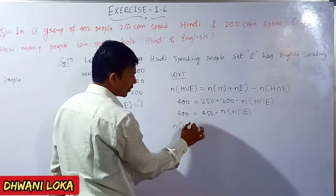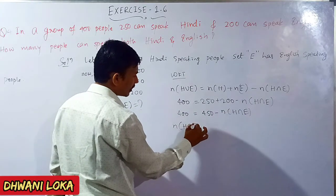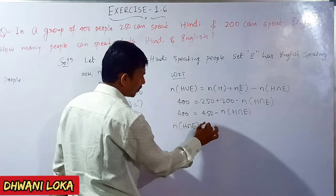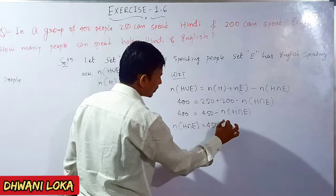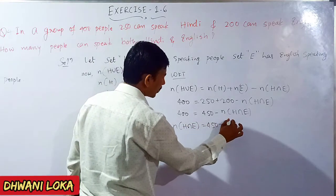Therefore, N of H intersection E is equal to 450 minus 400, which equals 50. So 50 people can speak both Hindi and English.